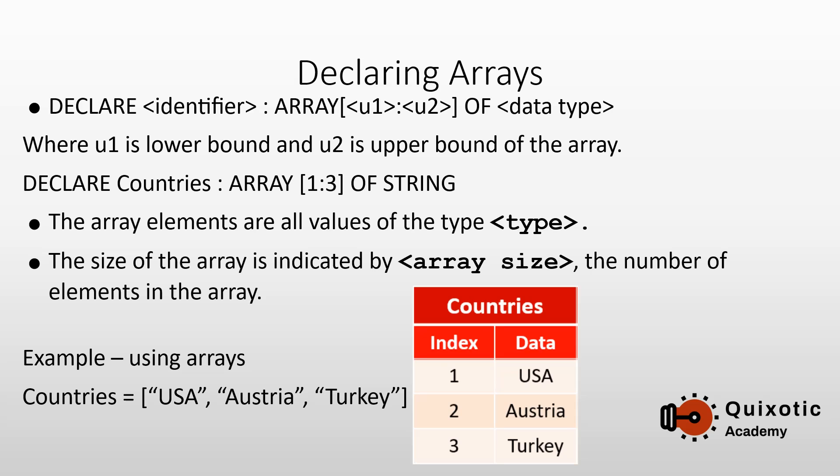To declare an array, a programmer gives it at least two properties: an identifier, which is its name, and the size of the array, which is the number of elements it will hold. Values are assigned to an element by referring to the element's position. For example, we can declare an array of countries with three elements: USA, Austria, and Turkey.